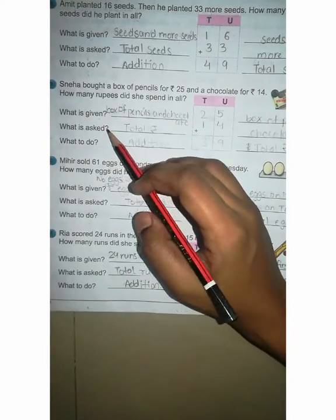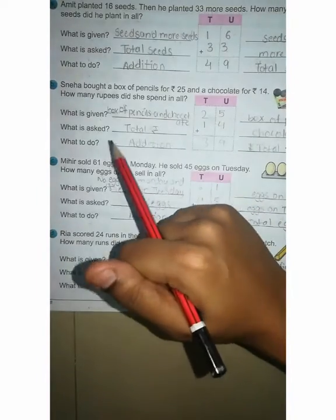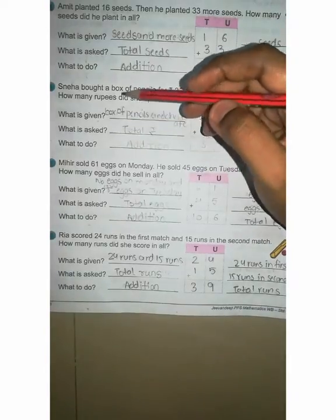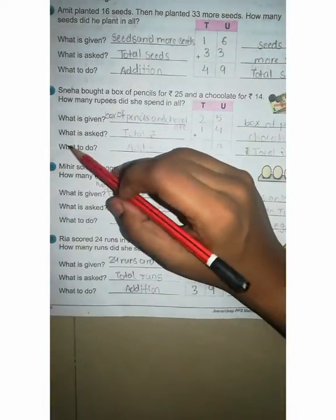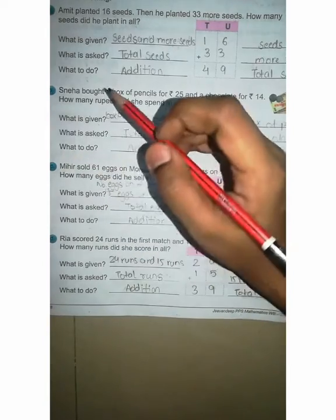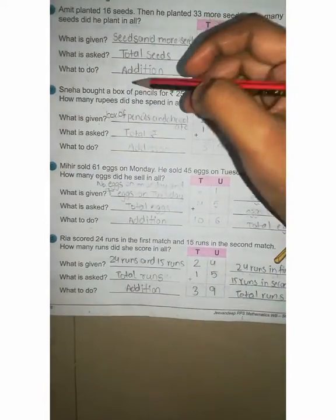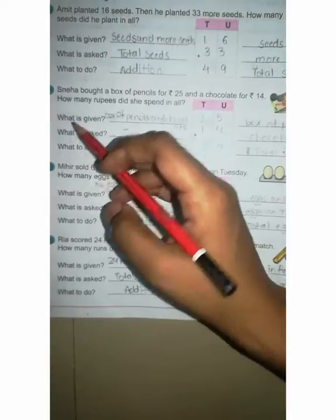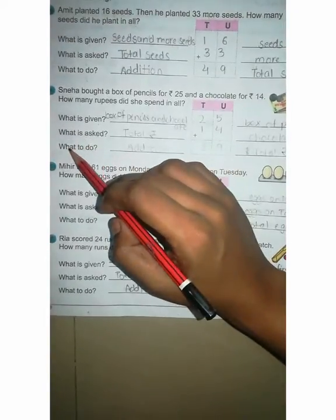What is asked? Total rupees, right here, total rupees. Now next, what to do in this question? Addition, because what is said in all, it means addition. Add here, addition.